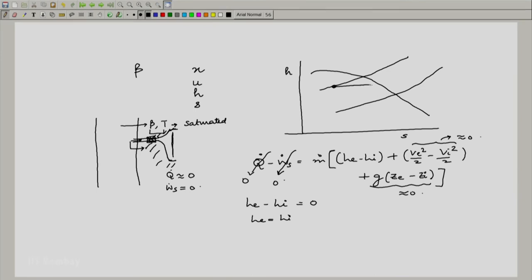What are we left with now? We are just left with H_e minus H_i is equal to 0 or H_e is equal to H_i. What does that mean here? It means that we have traversed here and come to a state on the lower pressure line. This is P lower and this is P higher. The enthalpy of this state is the same as the enthalpy of this state.